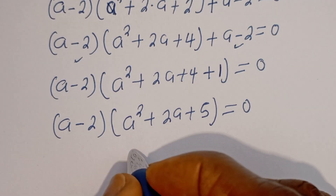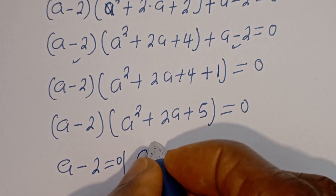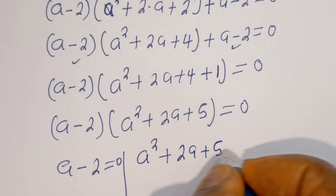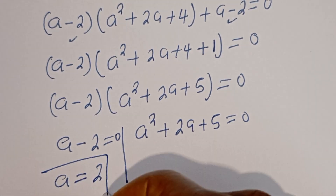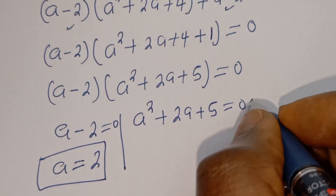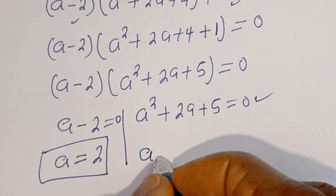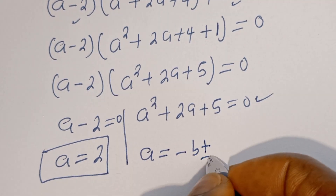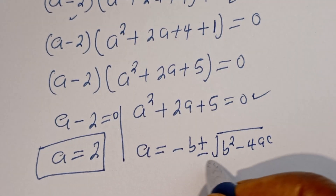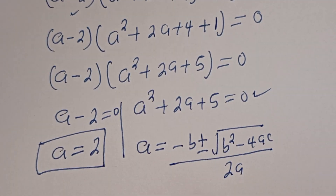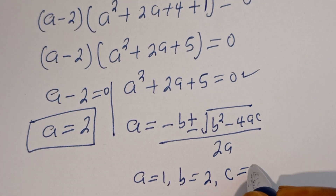There are two cases. The first case is A minus 2 equals 0, and the second case is A² plus 2A plus 5 equals 0. From the first case, A equals 2. This is the first value. The second case is a quadratic equation solved using the quadratic formula, where a equals 1, b equals 2, c equals 5.